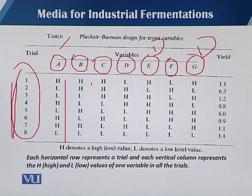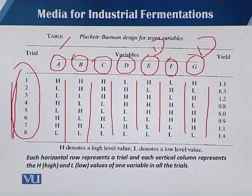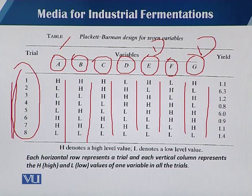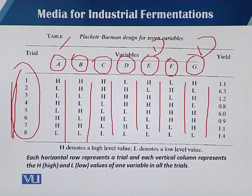The same rule applies — randomly assign 4 H and 4 L in all 7 different variables. By designing this, we run 8 different experiments for any desired fermentation product. For example, in one trial, variable A has a high value, B and C are also high, D and F have low values, and E and G — the dummy variables — are designated as high. By this we can set different conditions to run 8 different experiments and obtain the yield shown in this column.